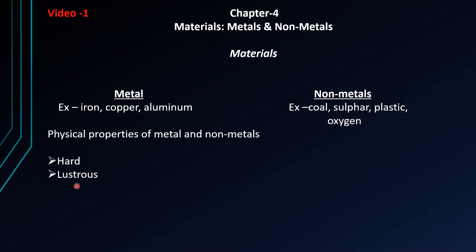Second property is lustrous — that means chamkila (shiny). All metals are lustrous, like silver, gold, copper, etc. Non-metals such as coal and plastic are non-lustrous.